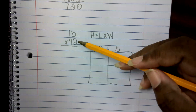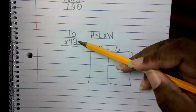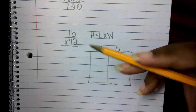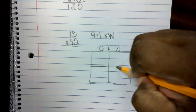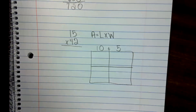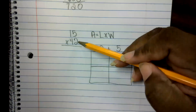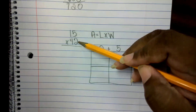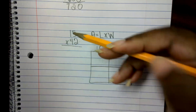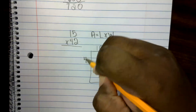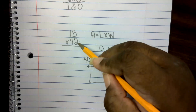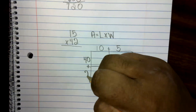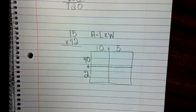Now I have to get my width, which is going to be my bottom number, 42. I have two digits, so that tells me I'm going to need two boxes going down. I'm going to get the expanded form of 42: the four in the tens place is worth 40, plus the two in the ones place is worth 2. Now I'm going to use these numbers to figure out the product. Product means the answer to the multiplication problem.